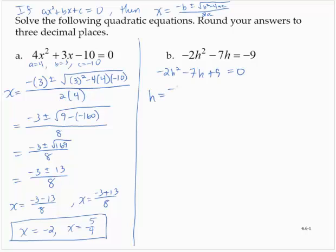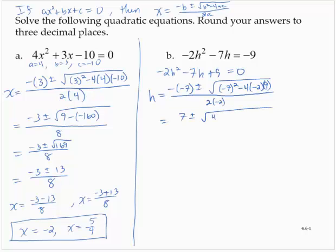h is equal to the opposite of negative 7 plus or minus the square root of negative 7 squared minus 4 times negative 2 times 9, all over 2 times negative 2. So h equals 7 plus or minus the square root of 49 minus negative 72, over negative 4. That gives us 7 plus or minus the square root of 121 over negative 4, and the square root of 121 is exactly 11.